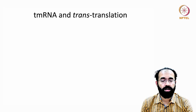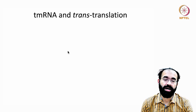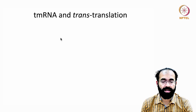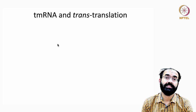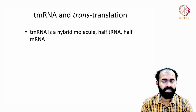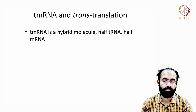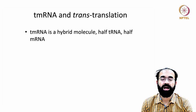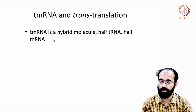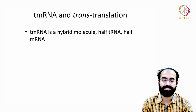Now let us look at another group of RNA: tmRNA and trans-translation. tmRNA is a hybrid molecule — half tRNA and half mRNA — so it can perform both functions, which is why we call it tmRNA.